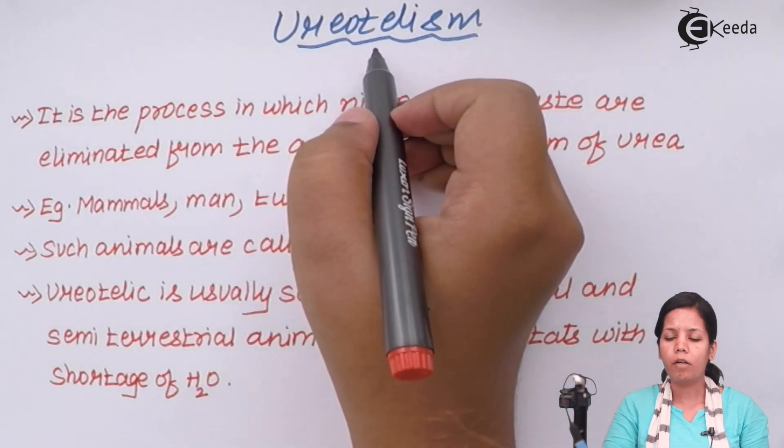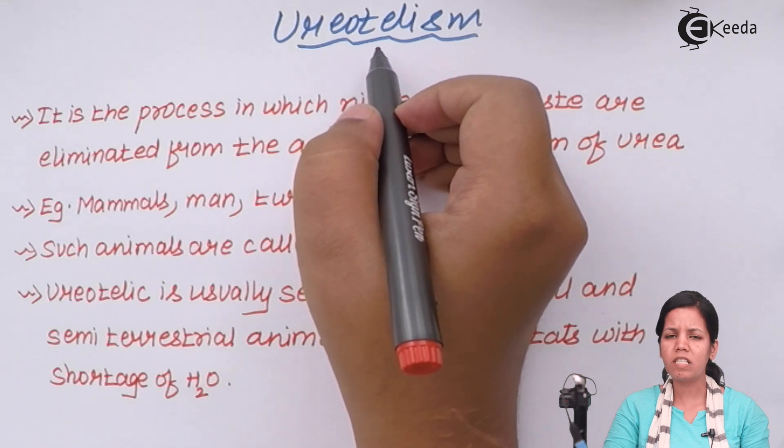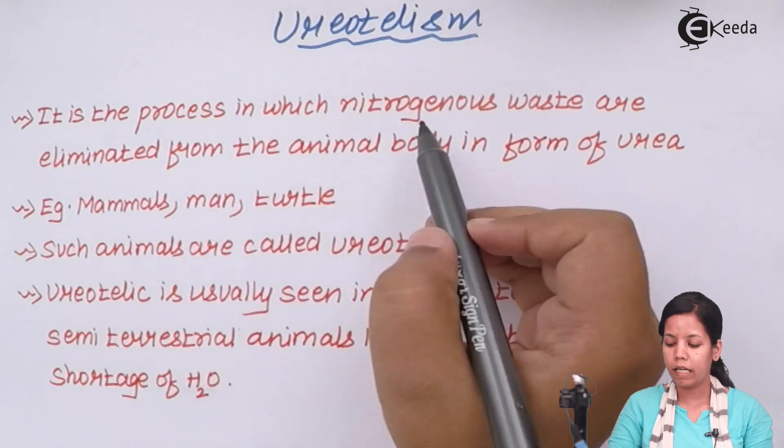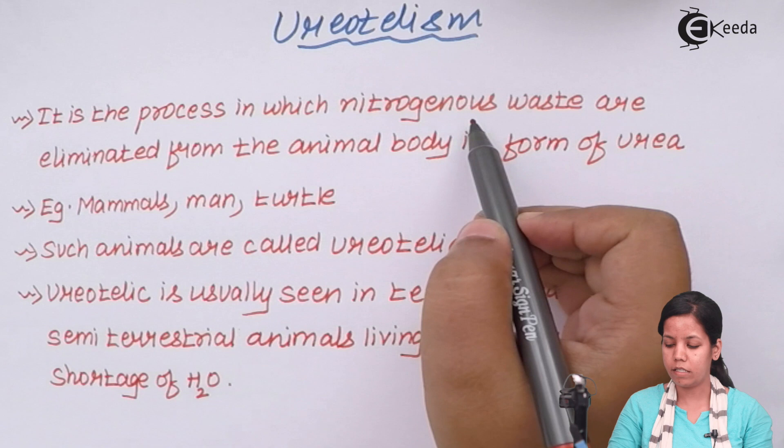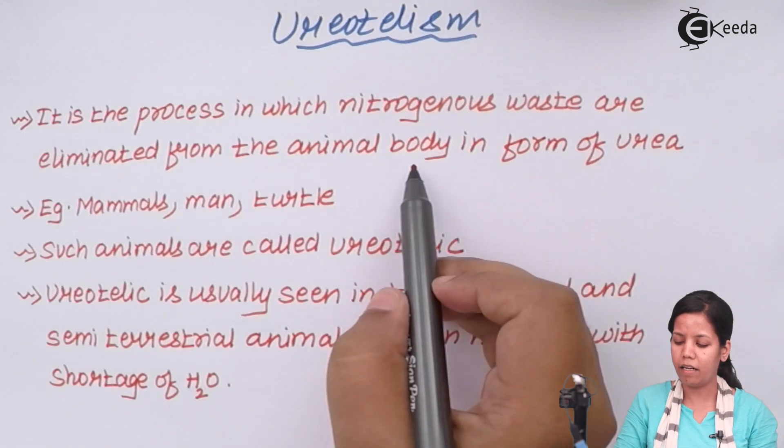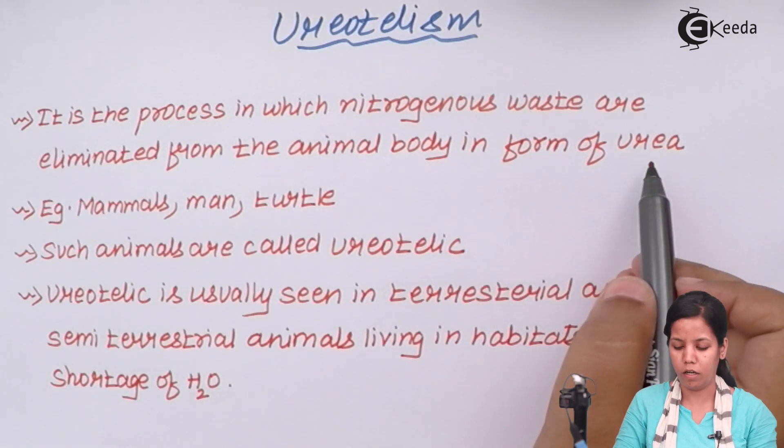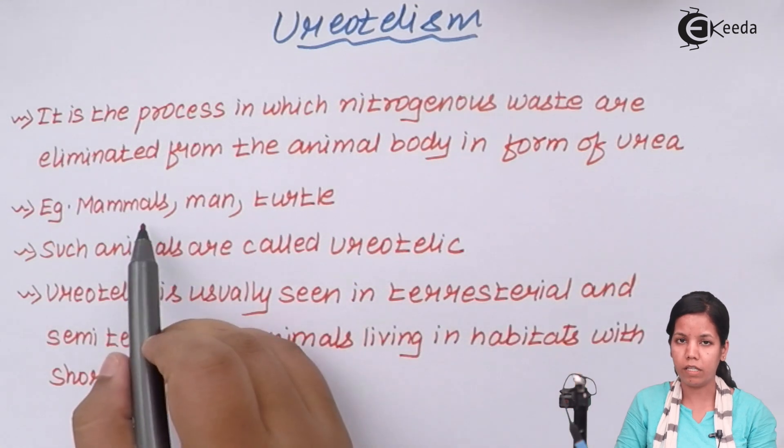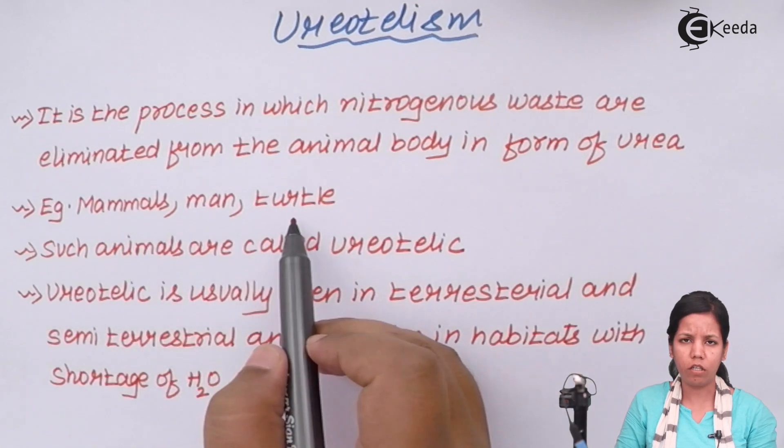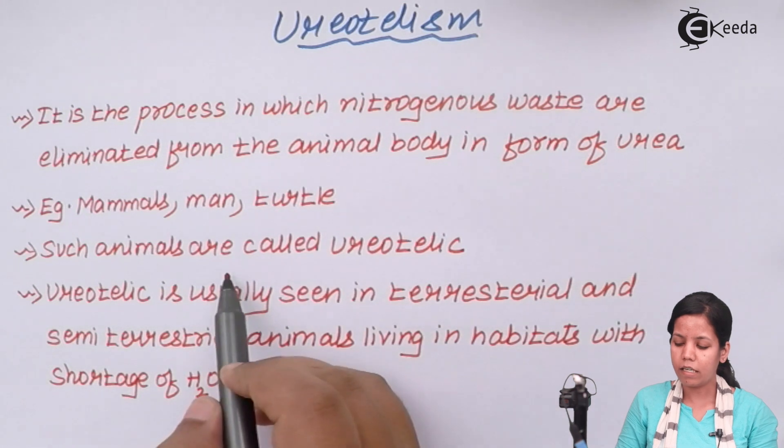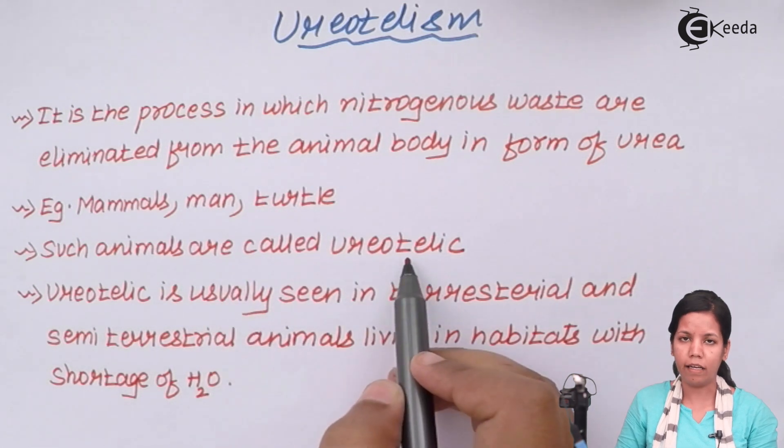Ureotelism, if I talk about it, can be simply said as a process in which nitrogenous wastes are eliminated from the animal body in the form of urea. Now ureotelism is basically found in mammals, man or turtle. Such animals are said to be ureotelic organisms.